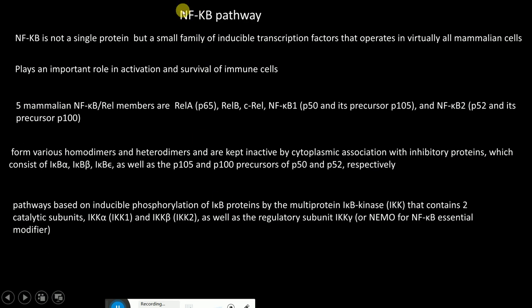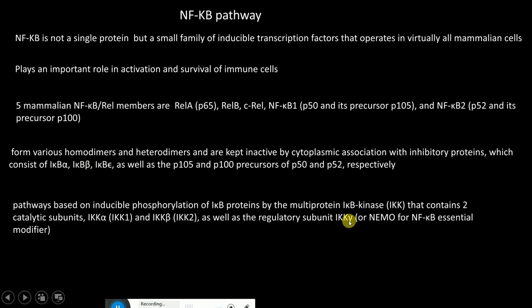The NF-κB pathway is divided into two pathways: canonical and non-canonical. Both canonical and non-canonical pathways are based on inducible phosphorylation of IKB proteins by the multiprotein IKB kinase, called IKK, which contains two catalytic subunits IKKα and IKKβ, as well as the regulatory subunit IKKγ or NEMO, for NF-κB essential modifier.